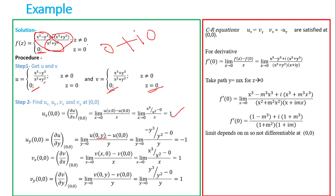Now check whether the CR equations are satisfied at the origin. We need to verify ux = vy and vx = −uy. Checking: ux = 1 and vy = 1, so ux = vy is satisfied. And vx = 1 and −uy = −(−1) = 1, so vx = −uy is also satisfied. Therefore, CR equations are satisfied at the origin.